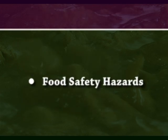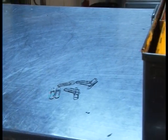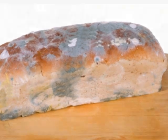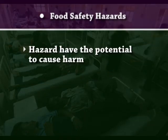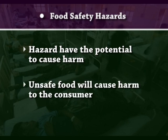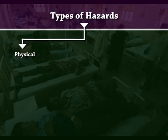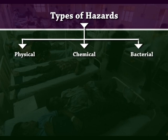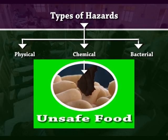Next is food safety hazards. This session deals with the hazards that put the safety of food at risk. A hazard is a biological, chemical or physical agent in, or a condition of, food with the potential to cause an adverse effect to the health of the consumer. Hazards have the potential to cause harm, and unsafe food will cause harm to the consumer. Types of hazards are physical, chemical and bacterial — all of which may cause food to become unsafe for human consumption.